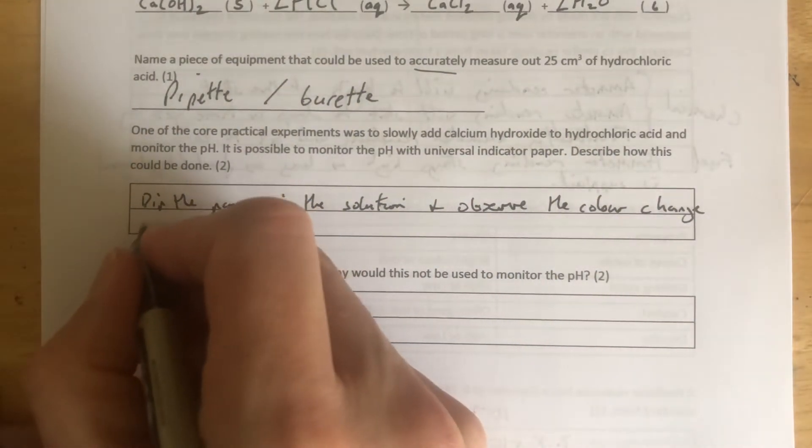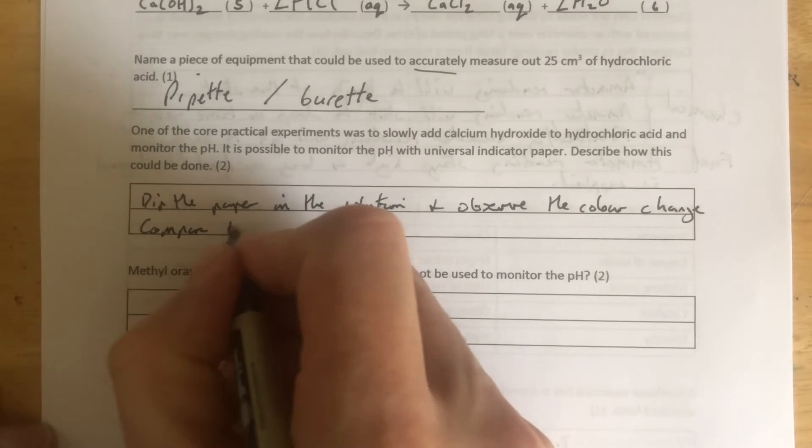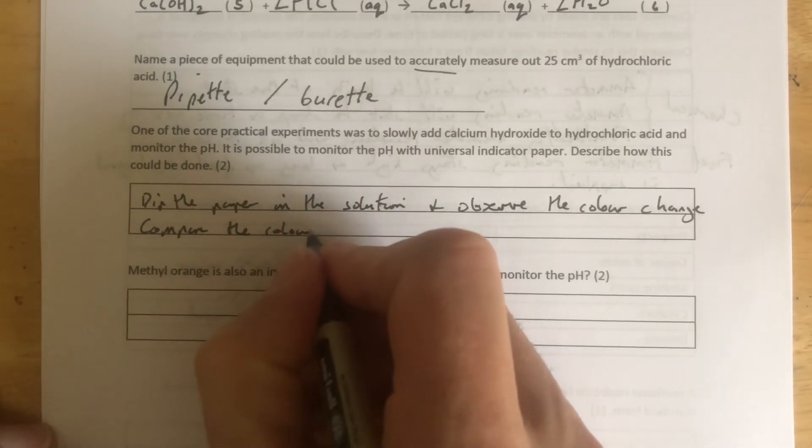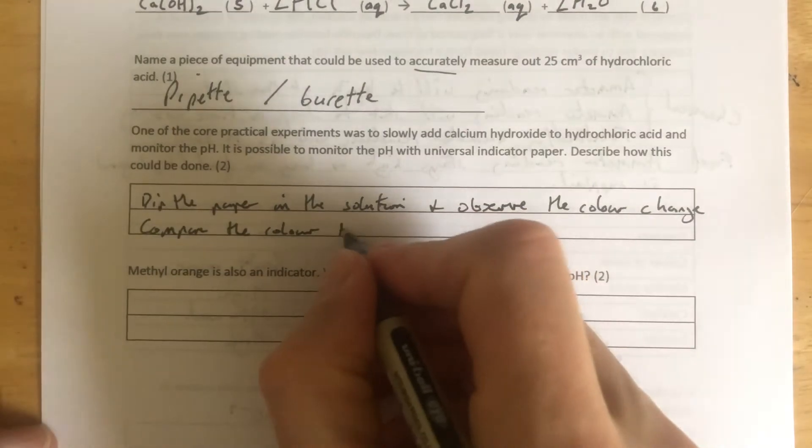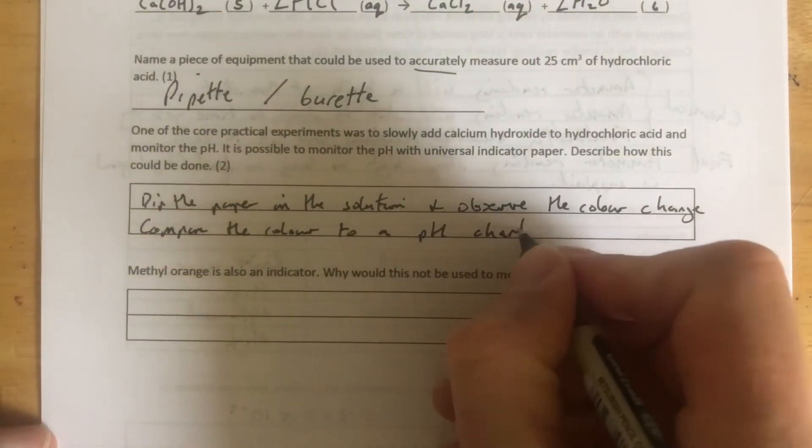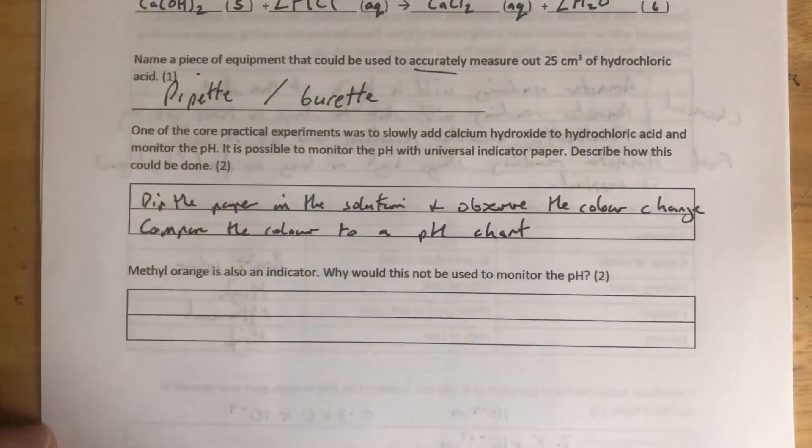Second marking point: we are going to compare the color to a pH chart or pH scale. That's our second mark. All these questions and more on algebrachemistry.com.